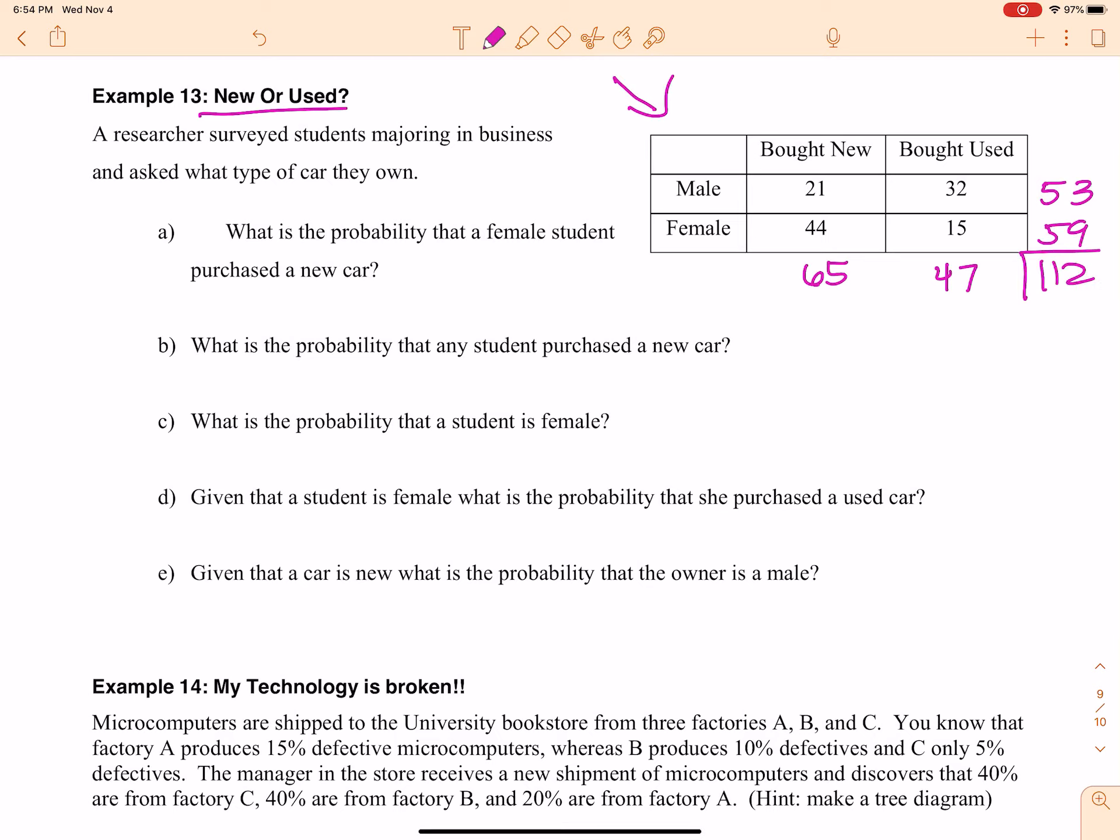All right, so what is the probability that a female student purchased a new car? So I'm going to communicate, what is the probability a female purchased new? All right, so what I'm going to do is look for that intersection on my table. So that's 44 out of the total, 112.